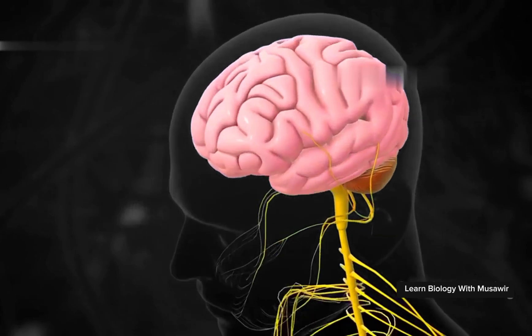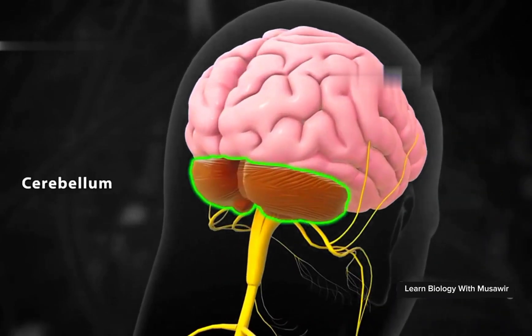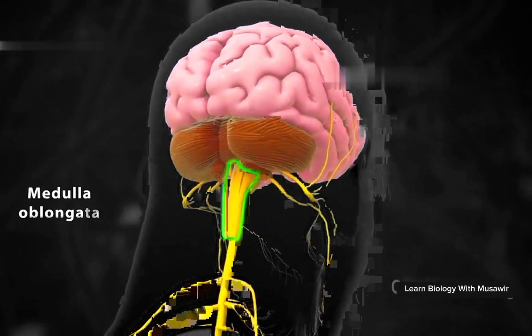The brain is located in the cranium of the skull. It is made of three main parts: the cerebrum, cerebellum, and medulla oblongata.